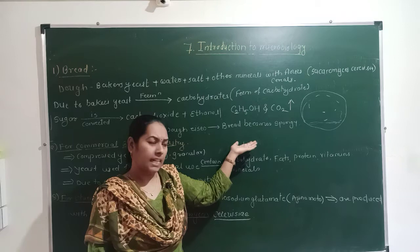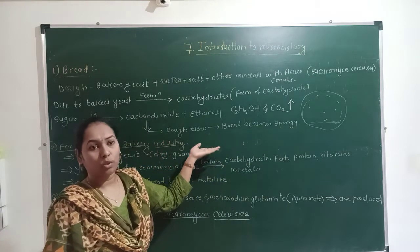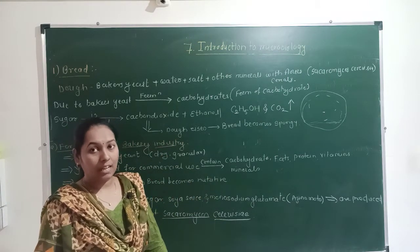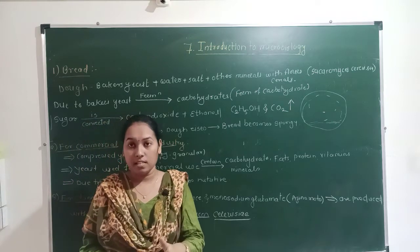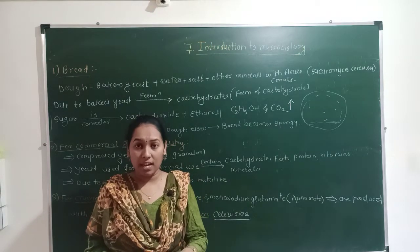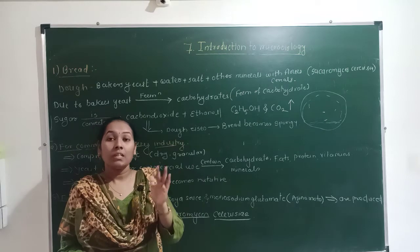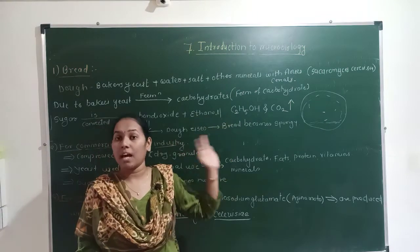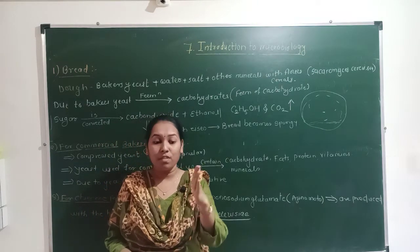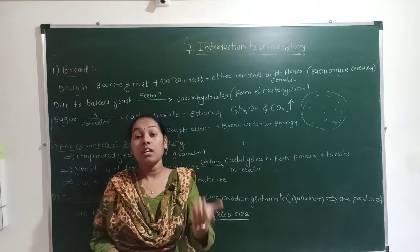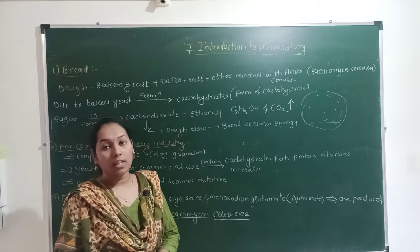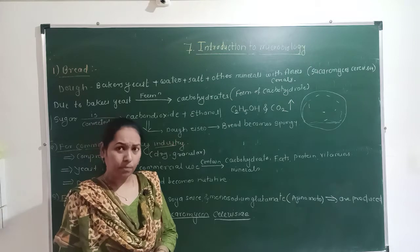The bread is processed and becomes ready. After processing, the bread becomes ready. What is this? Baker's yeast. What is the main process in the formation of bread? Baker's yeast — this is the microorganism, this is the yeast. This is the chemical reaction: the carbohydrate, the sugar, undergoes fermentation, and because of the fermentation, CO2 gas is produced. With CO2 gas, bread becomes spongy.